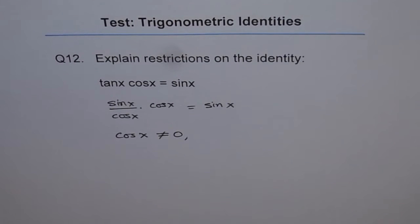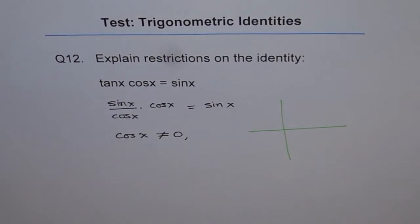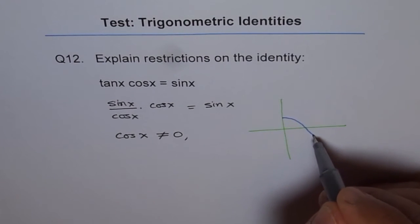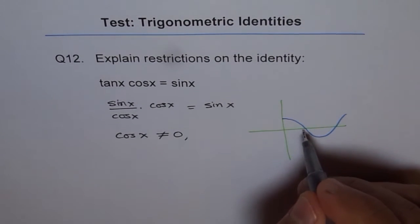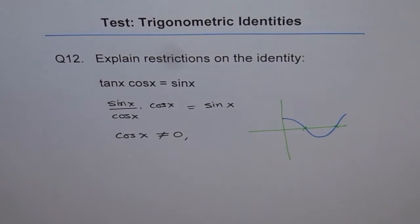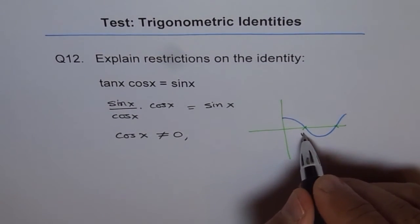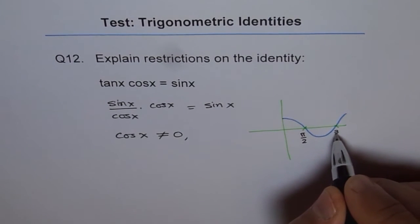If you draw a graph of cos x, what you find is that it is 0 at, within a domain of 2 pi, it is 0 at pi by 2 and 3 pi by 2.